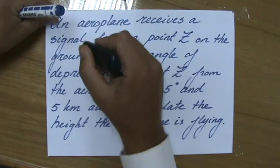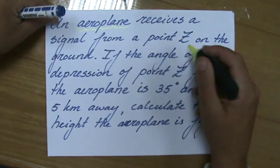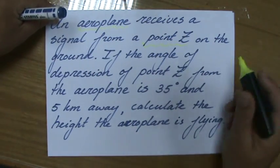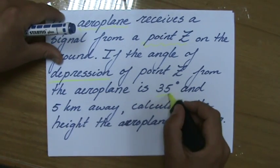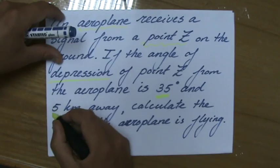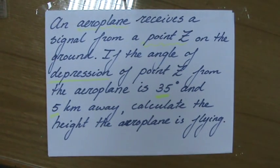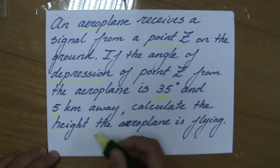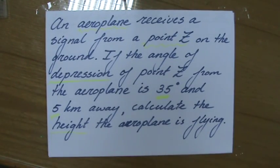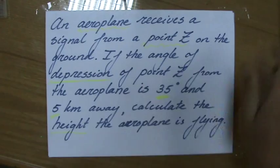So we have an airplane, I guess we can underline that, and a point Z. And the angle of depression is 35 degrees and it's also 5 kilometers away. Calculate the height. We have to calculate the height the airplane is flying, which is the perpendicular height above the ground.